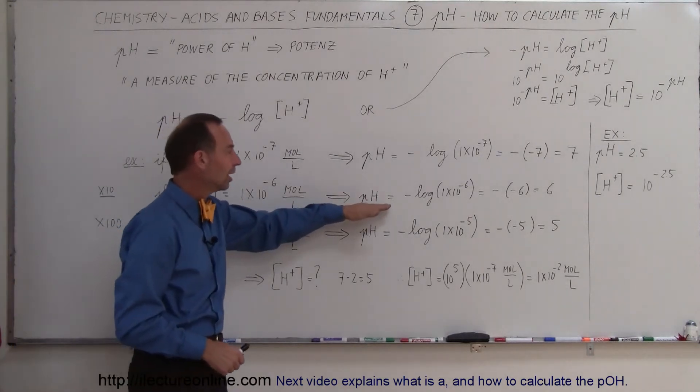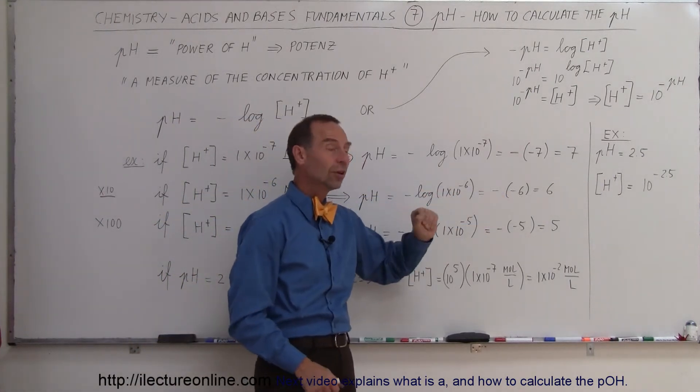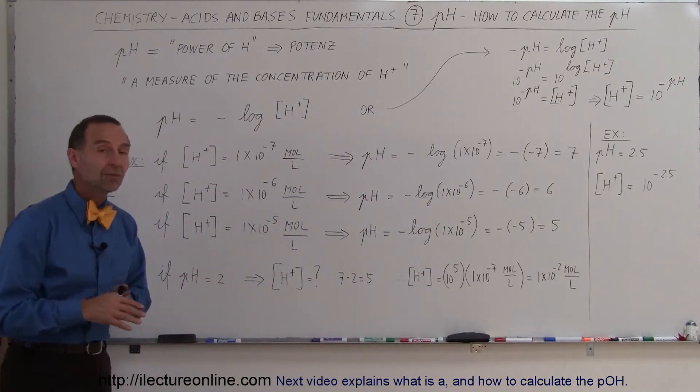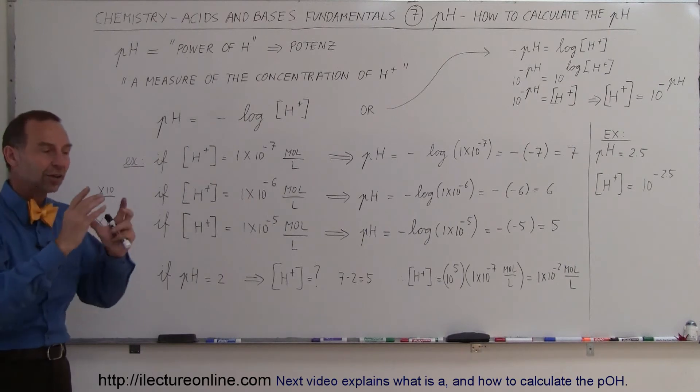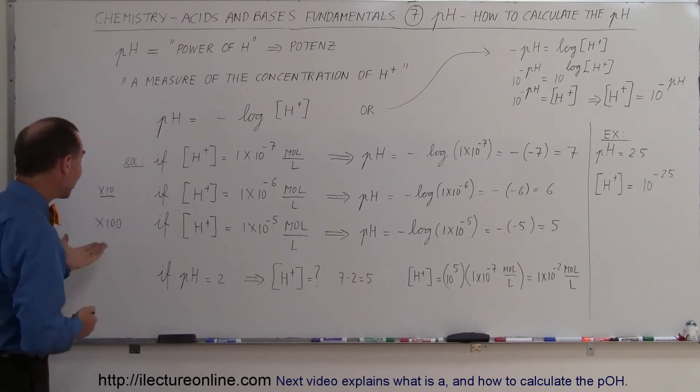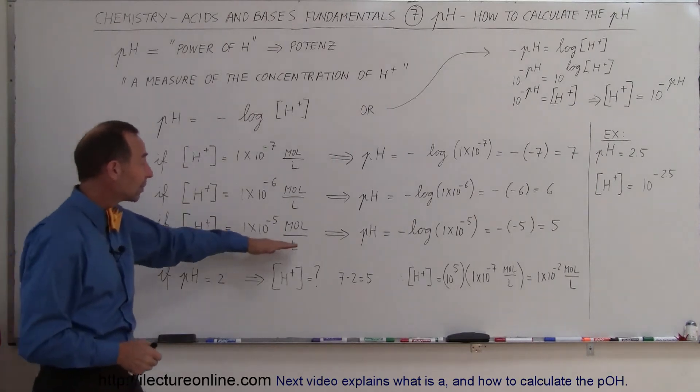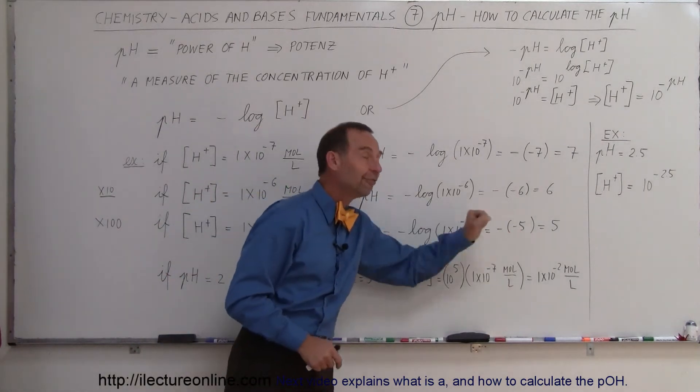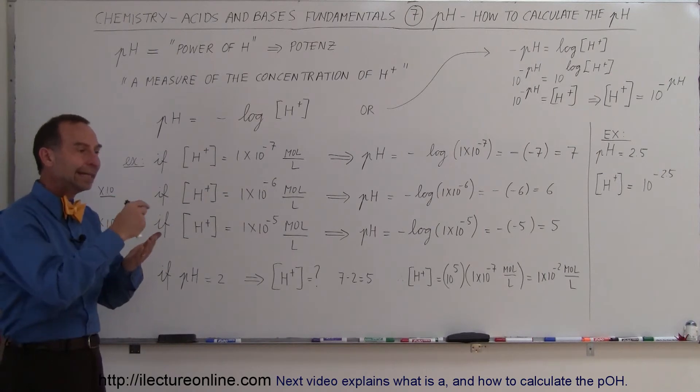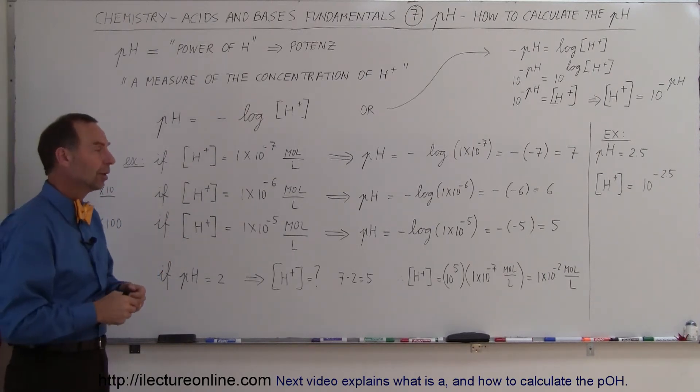Remember, the log of this gives you the exponent. Multiply times the negative, you get a positive 6. So that means the pH of 6 means there's 10 times as many hydrogen ions in that solution than when the pH is 7. Now, what if you have 100 times as many hydrogen ions in the solution? Well, then the pH becomes 5. So a pH of 5 means you now have 100 times as many hydrogen ions in the solution as when the pH is 7.